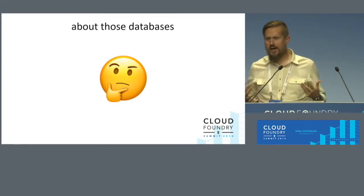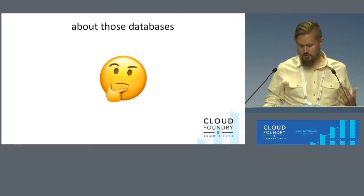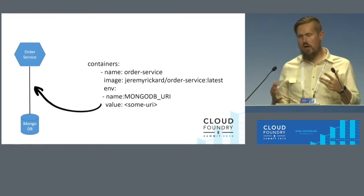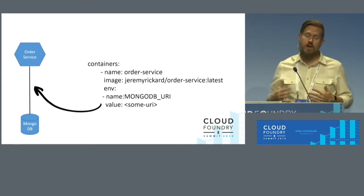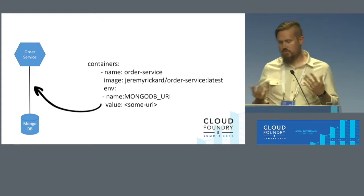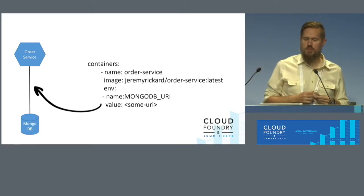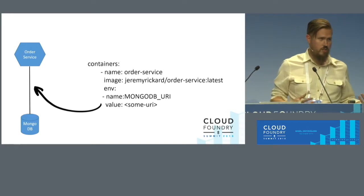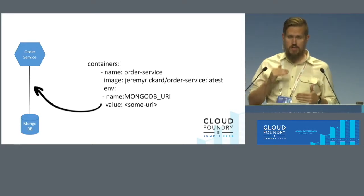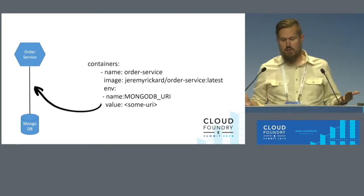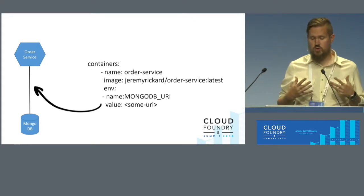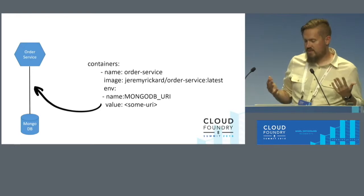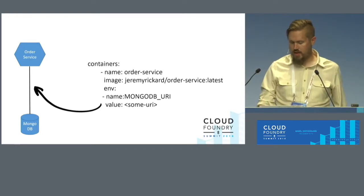Once you have services provisioned, how do you connect them to your applications? Most things when deploying applications to Kubernetes, you think of it as a 12-factor application — passing configuration via environment variables or by reading a configuration file mounted from the file system, like a config map. My preferred way is to use environment variables. Here we have an order service talking to MongoDB, where we populate an environment variable called MongoDB URI. It's easy to put that into your YAML file, but you're hard-coding that value.